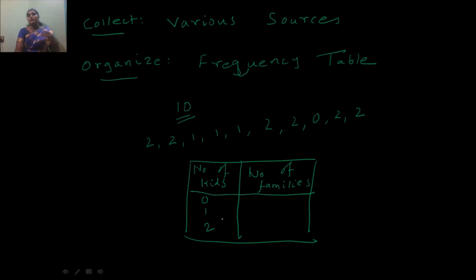Here, 0 appears only one time. So I have to write 1 against 0. And 1 appears 3 times. So I have to write 3 against 1. Next, 2 appears 6 times. So I have to write 6 here.